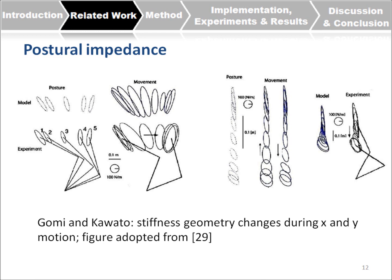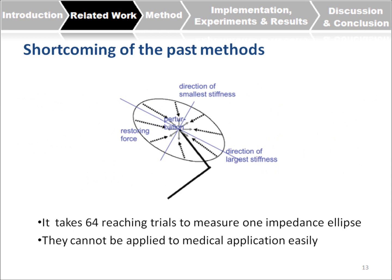It is also important to note that impedance is posture dependent — in different postures, the same subject with the same hand configuration will show different impedance. The shortcoming of past methods is that they require so many reaching trials to configure only one ellipse, and they cannot be applied to clinical applications because we cannot ask stroke patients who have difficulty performing even one reaching task to perform 64 reaching tasks just to obtain one impedance ellipse.